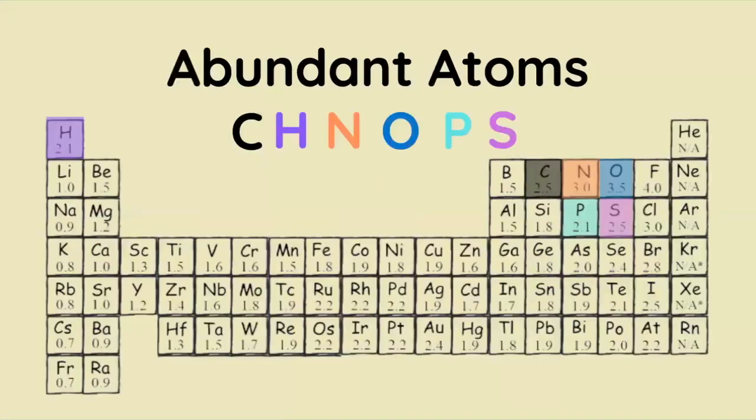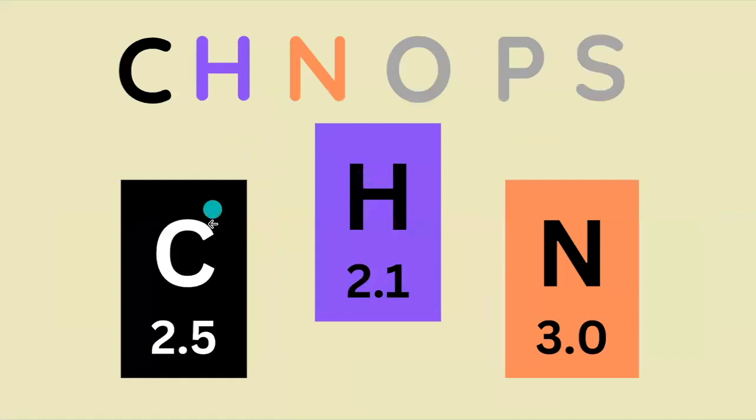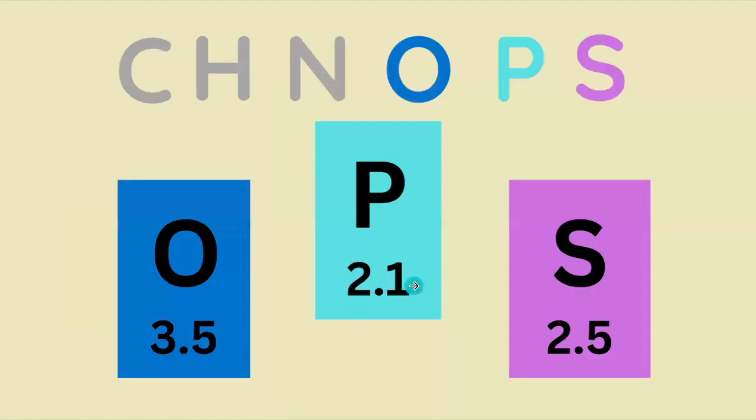First, we have the elements that show up frequently in the molecules that we study, and they fit the acronym CHONPS. Carbon has a 2.5 electronegativity, hydrogen 2.1, nitrogen 3.0, oxygen 3.5, phosphorus 2.1, sulfur 2.5.